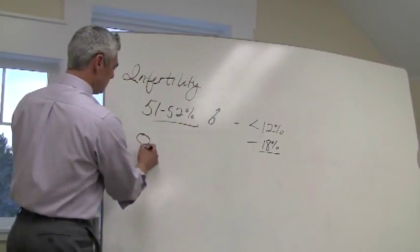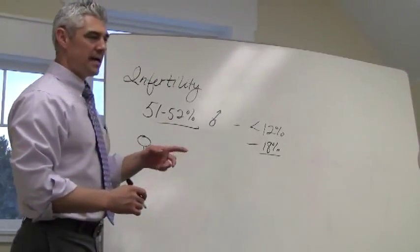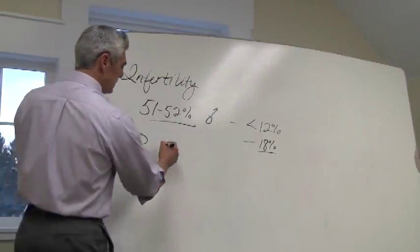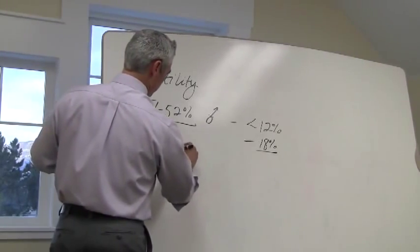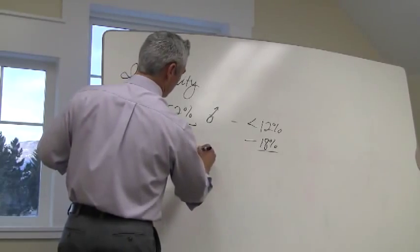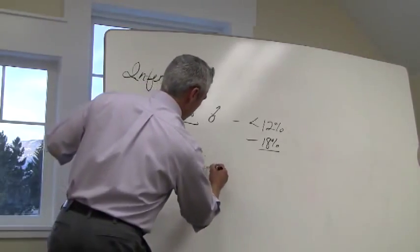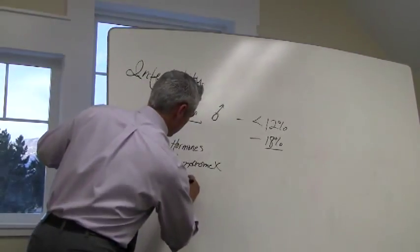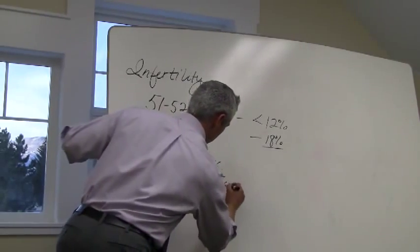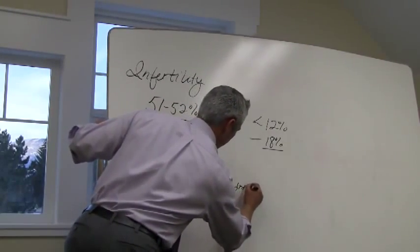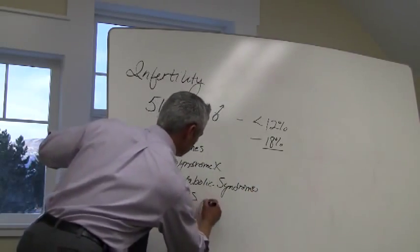When we look at female infertility, one of the primary issues that we're looking at has to do with some type of a change in hormones. And when we talk about hormones, oftentimes we're talking about something called Syndrome X, Metabolic Syndrome, or something called PCOS, or Polycystic Ovarian Syndrome.